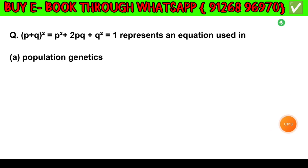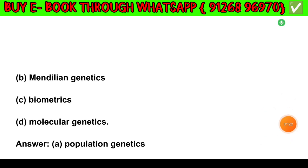Question number 4. (P + Q)² = P² + 2PQ + Q² = 1 represents an equation used in: Option A — Population genetics. Option B — Mendelian genetics. Option C — Biometrics. Option D — Molecular genetics. The answer is Option A: Population genetics.